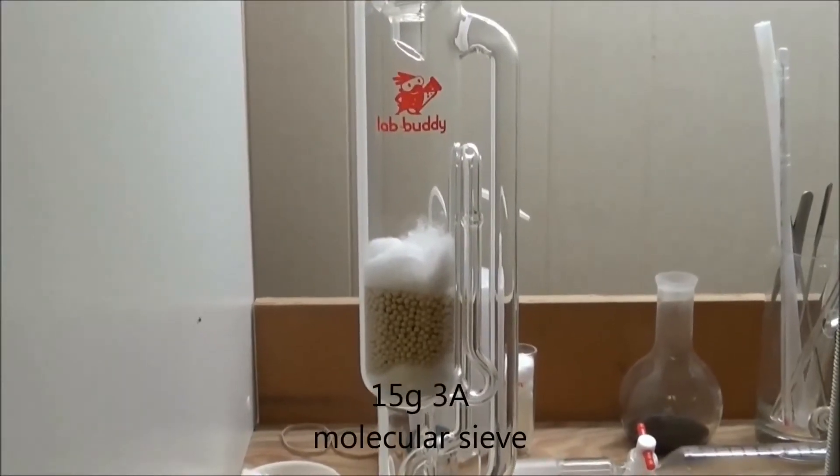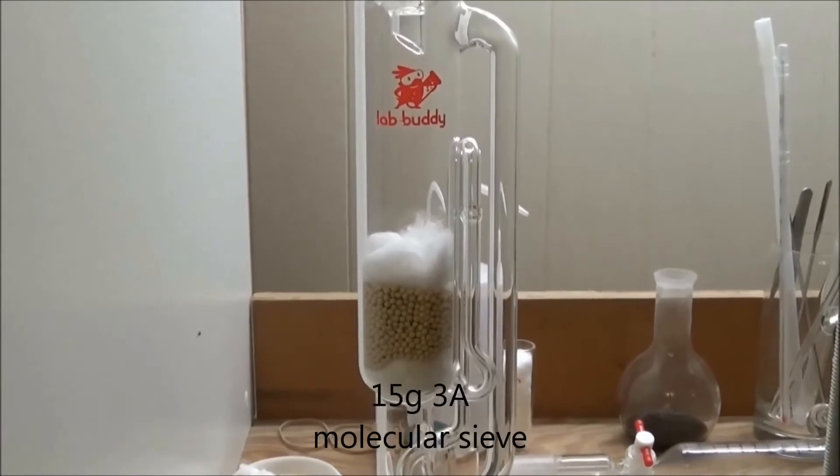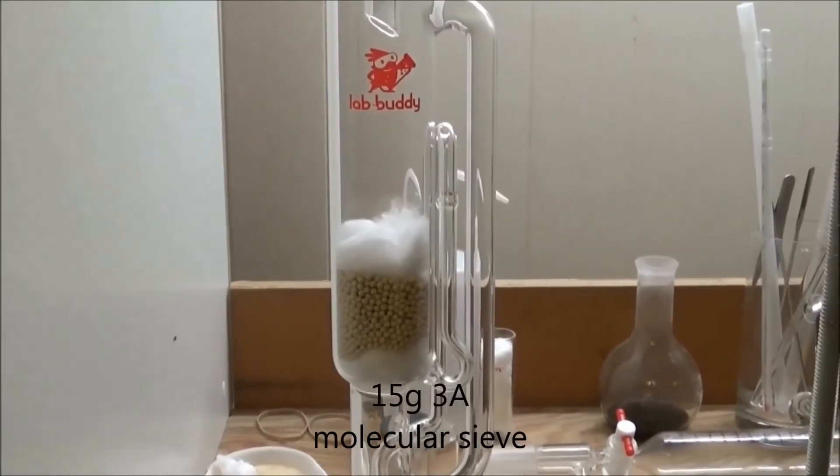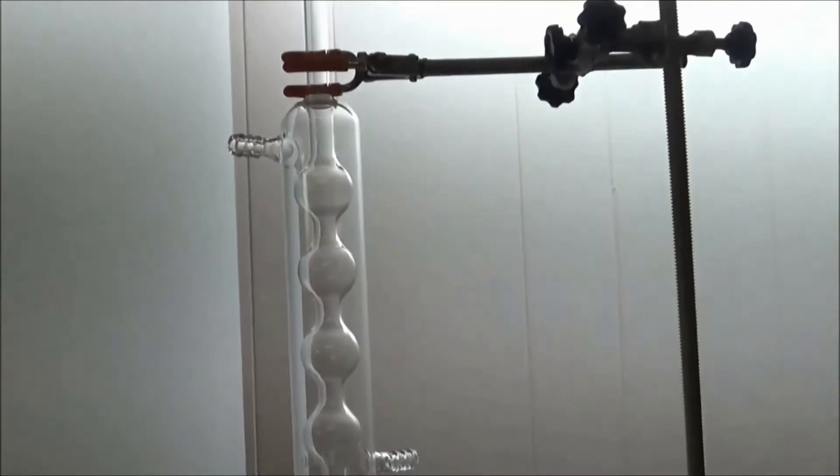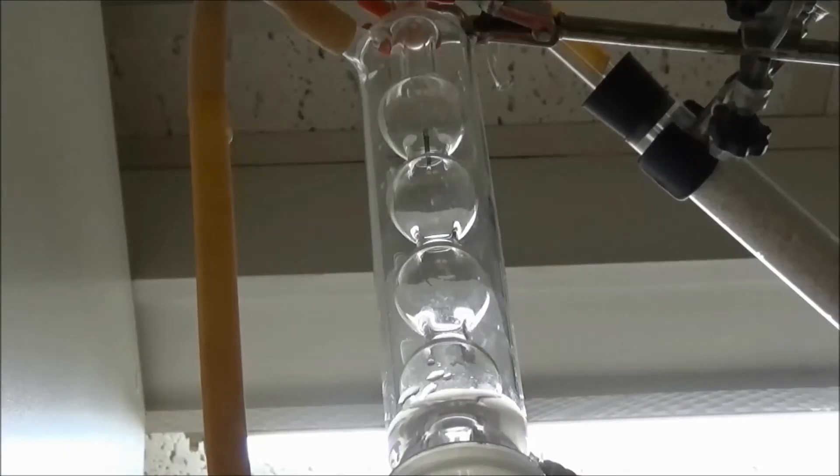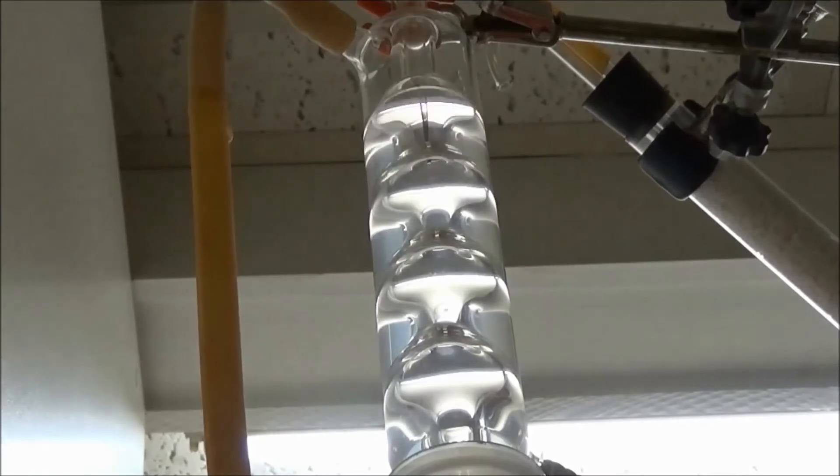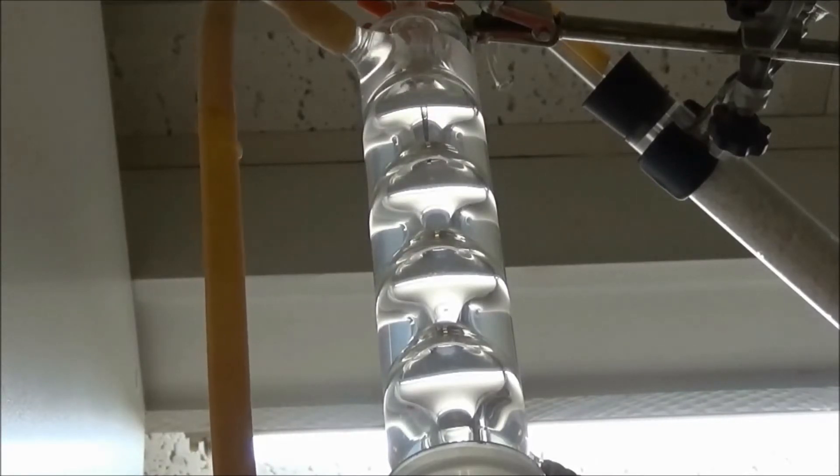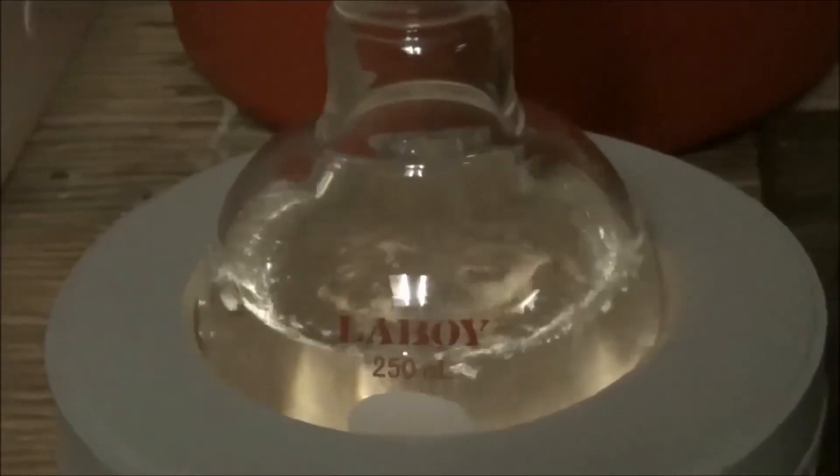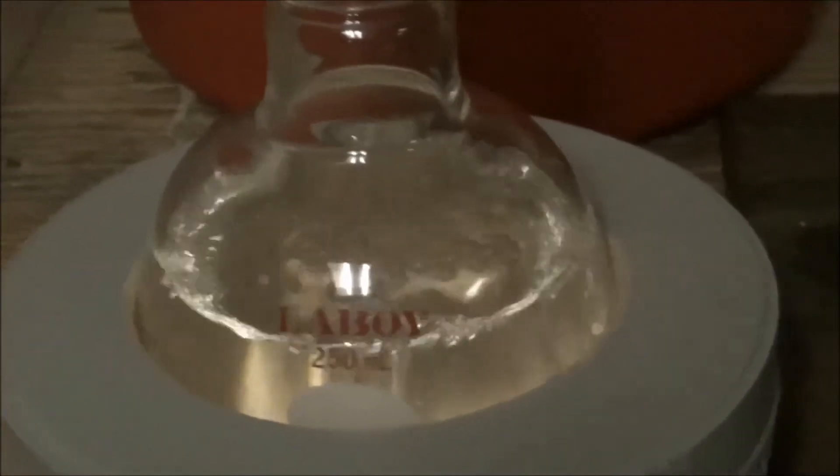Over the flask I set up a Soxhlet extractor which was packed with 15 grams of 3A molecular sieves. Water was started to the condenser and I attached a drying tube to the top of it. The flask was brought to a boil and left for two hours.